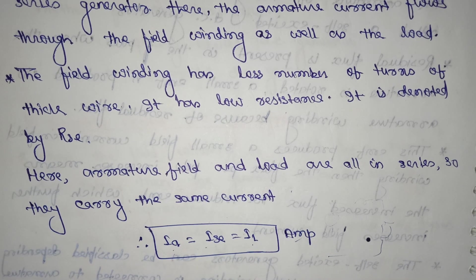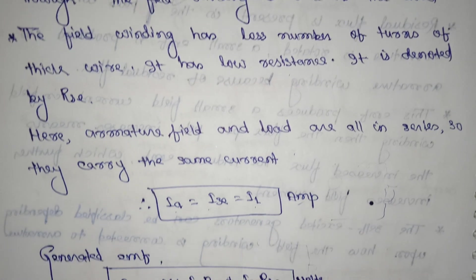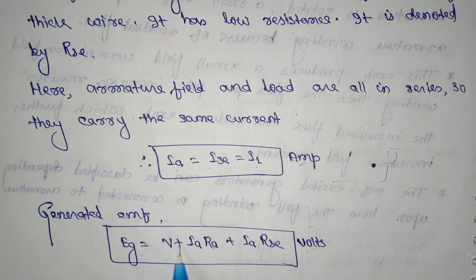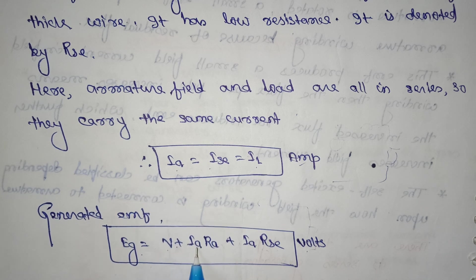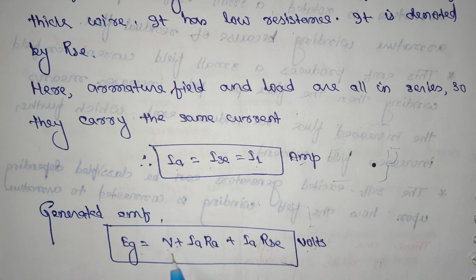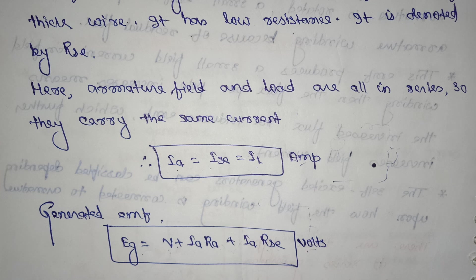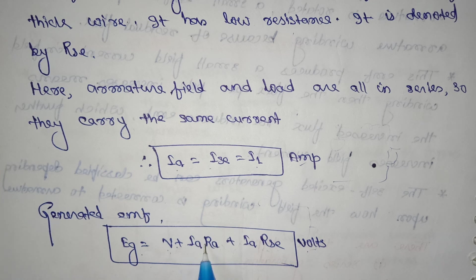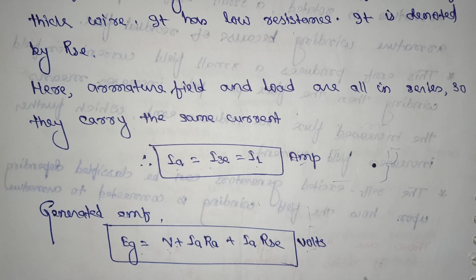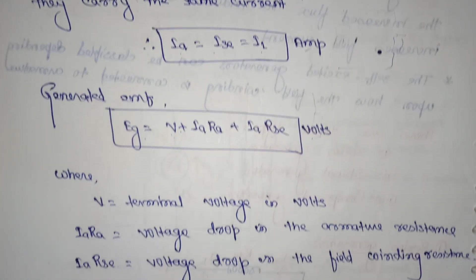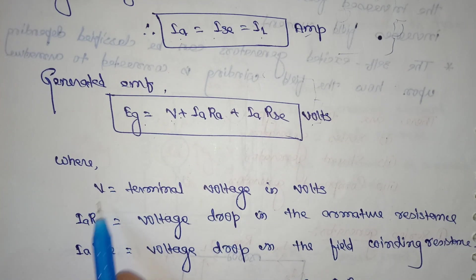Generated EMF equation can be written like that: Eg = V + IaRa + IaRse. Where V is the terminal voltage in volts, IaRa is voltage drop in the armature resistance, IaRse is voltage drop in the field winding resistance. Also I have written in the words you can see here: V, IaRa, and IaRse.